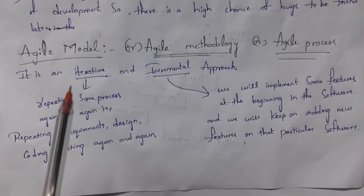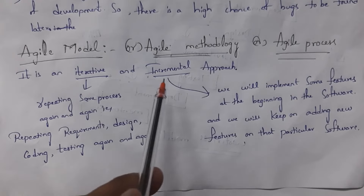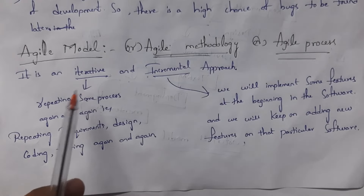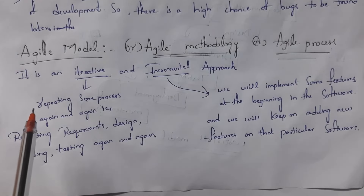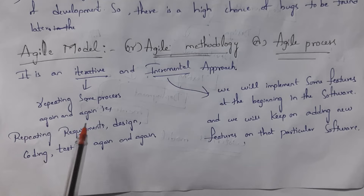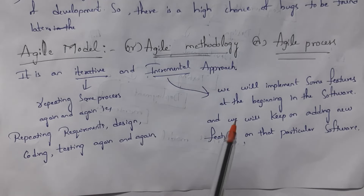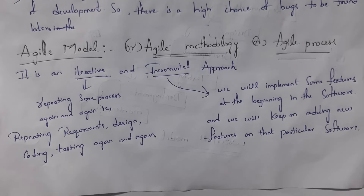Agile model is an iterative and incremental approach. Iterative means whenever we get any new feature, we repeat the steps. Incremental means we initially create software with very basic features and then keep on adding new features to that same software.